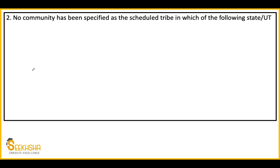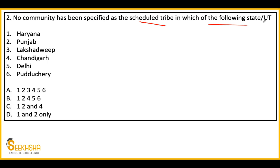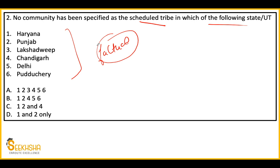Next question: No community has been specified as a Scheduled Tribe in which of the following states or UTs? The options given are: 1-Haryana, 2-Punjab, 3-Lakshadweep, 4-Chandigarh, 5-Delhi. The answer options are: various combinations. This is a factual question - if you have studied it well, you can answer it; there's no guessing here. The answer is Option B: 1, 2, 4, 5, 6.